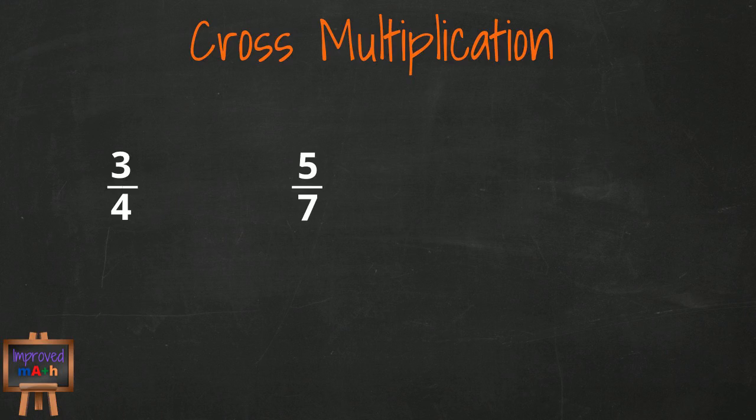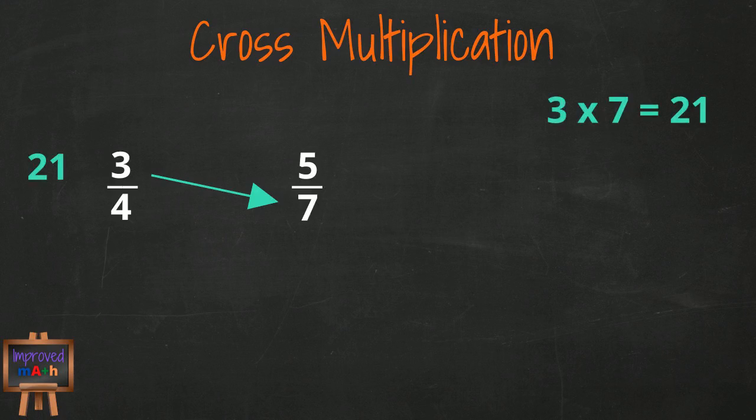Looking at the numerator of our first fraction, 3, we multiply it by the denominator in our second fraction, 7. We get 21. We always write the result next to the numerator that we are multiplying.